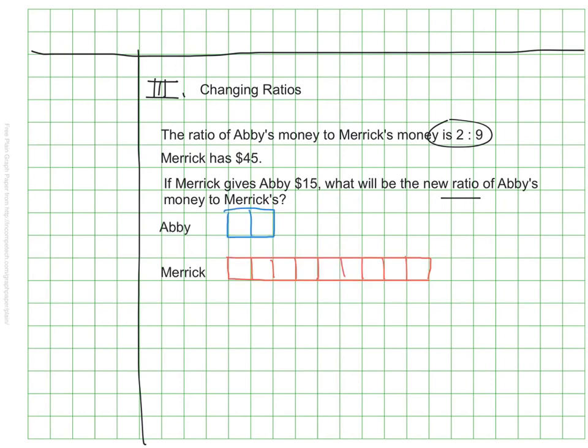So here is my tape diagram ready to be set up. And as before, I was careful to make sure I lined everything up appropriately. Now, there's one piece of information here that I haven't recorded, and that's that we know Merrick's total. So I'm actually going to write my line here below Merrick rather than on the right-hand side as I've done in the past. Because we know Merrick has 9 pieces totaling 45. I know that if I do 45 divided by 9, I'll find out that each one of his rectangles is worth $5. That also tells me then that Abby currently has $10.